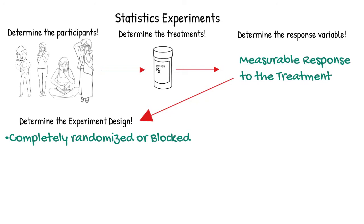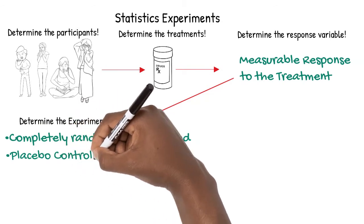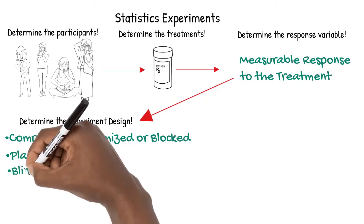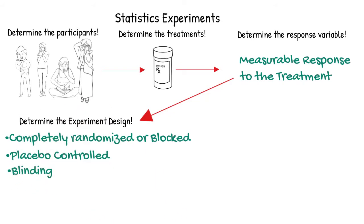Then randomly assign treatments within each group. Another element that helps us to analyze the effect of various treatments in an experiment design is using a placebo as a control variable for a randomly selected group of participants. A placebo is a neutral treatment that is known to have no real effect on the response variable. Using a placebo, like a sugar pill, is one method that can be used to blind the participants in an experiment.